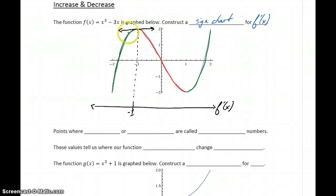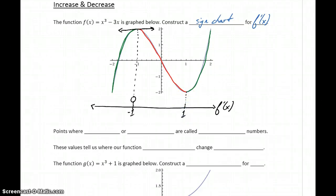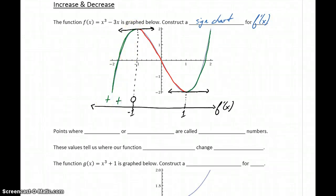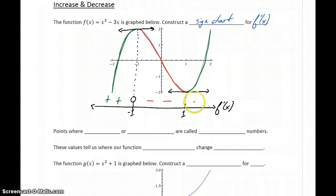The idea being that for our function to change from increasing to decreasing — to change from positive to negative — at some point our derivative function has to take on a value of 0. The same thing happens at 1: to change from decreasing to increasing, our derivative has to take on a value of 0, so the slope is 0, meaning the graph is horizontal. So on the interval from negative infinity to negative 1, the function is increasing and the derivative gives positive values. From negative 1 to 1 the function is decreasing, giving negative derivative values. And for values greater than 1, the derivative is positive again since our function is increasing.